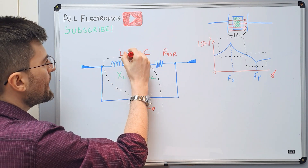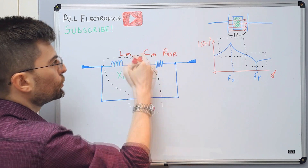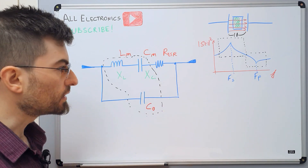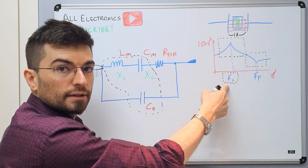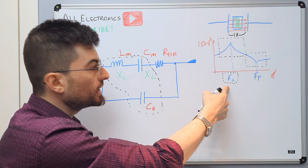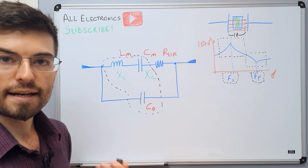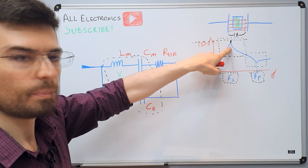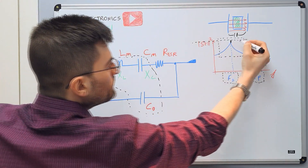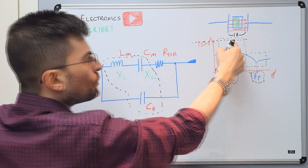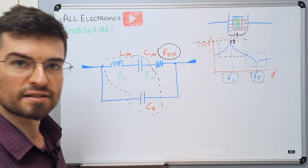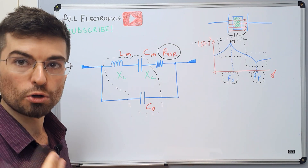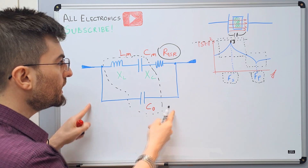Now we can write equations to get the parameters of the crystal: Lm (motional inductance), Cm (motional capacitance), RESR, and C0 from the measurements. The important measurements are: the series resonance frequency, the parallel resonance frequency, and the insertion loss — how many dBs below 0 dB is the peak of the series resonance, generated by the series resistance. But we have four unknowns and only three measurements, so we are missing one equation or one measurement.